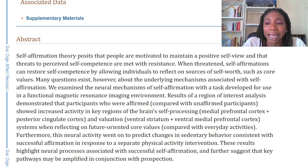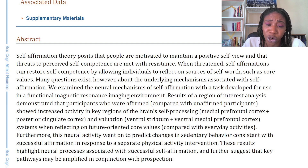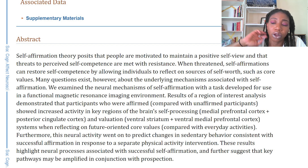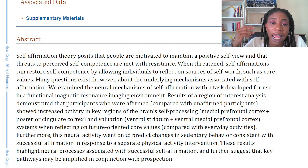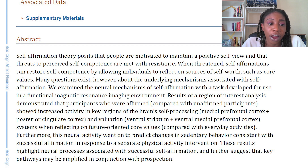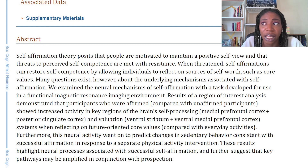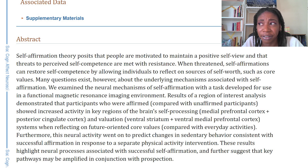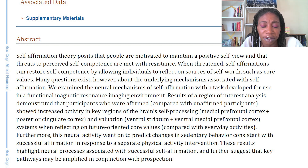Researchers anticipated that the regions involved in self-processing are the medial prefrontal cortex and posterior cingulate cortex. They also anticipated that the part of the brain dealing with valuation — how much you value or don't value something — is the ventral striatum and ventral medial prefrontal cortex. Those are all just different places in the brain, but those specific places have functions that other research has confirmed. This is when reflecting on future-oriented core values, which raises another question: what's a future-oriented core value as opposed to an everyday activity?